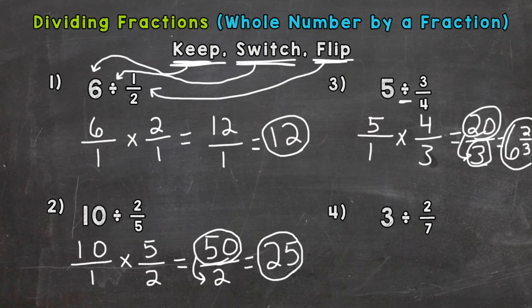For number four here, we have 3 divided by 2/7. So keep, switch, and flip. 3 times 7 is 21, and 1 times 2 is 2.